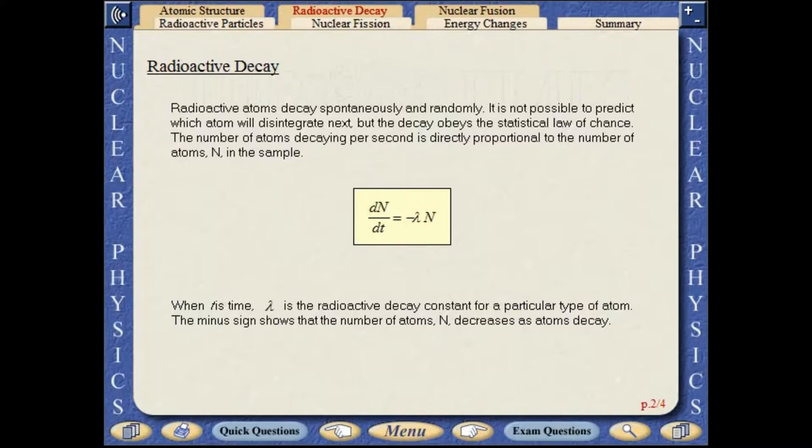Radioactive atoms decay spontaneously and randomly. It is not possible to predict which atom will disintegrate next, but the decay obeys the statistical law of chance. The number of atoms decaying per second is directly proportional to the number of atoms in the sample.